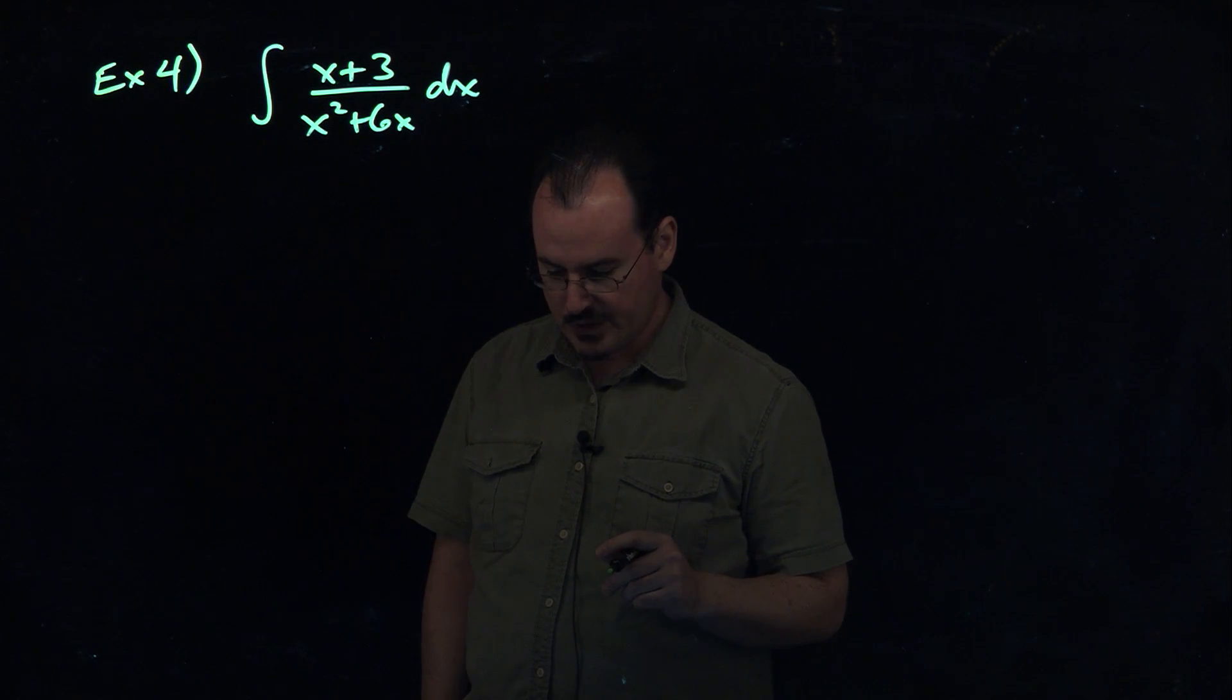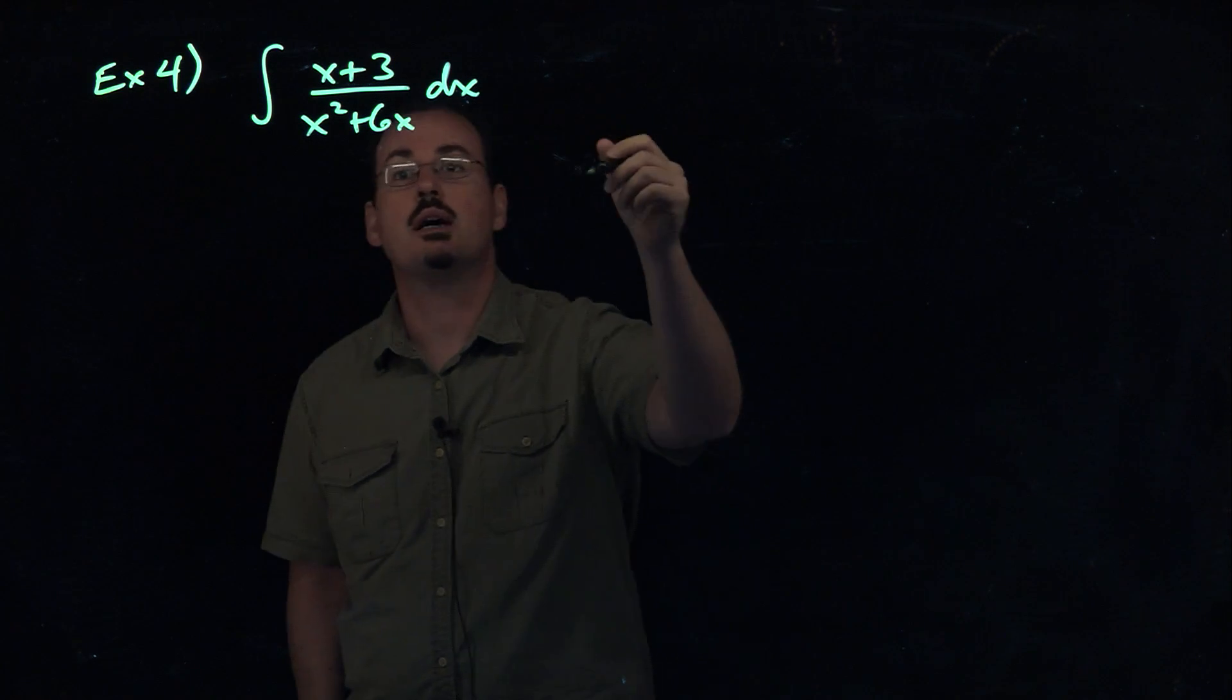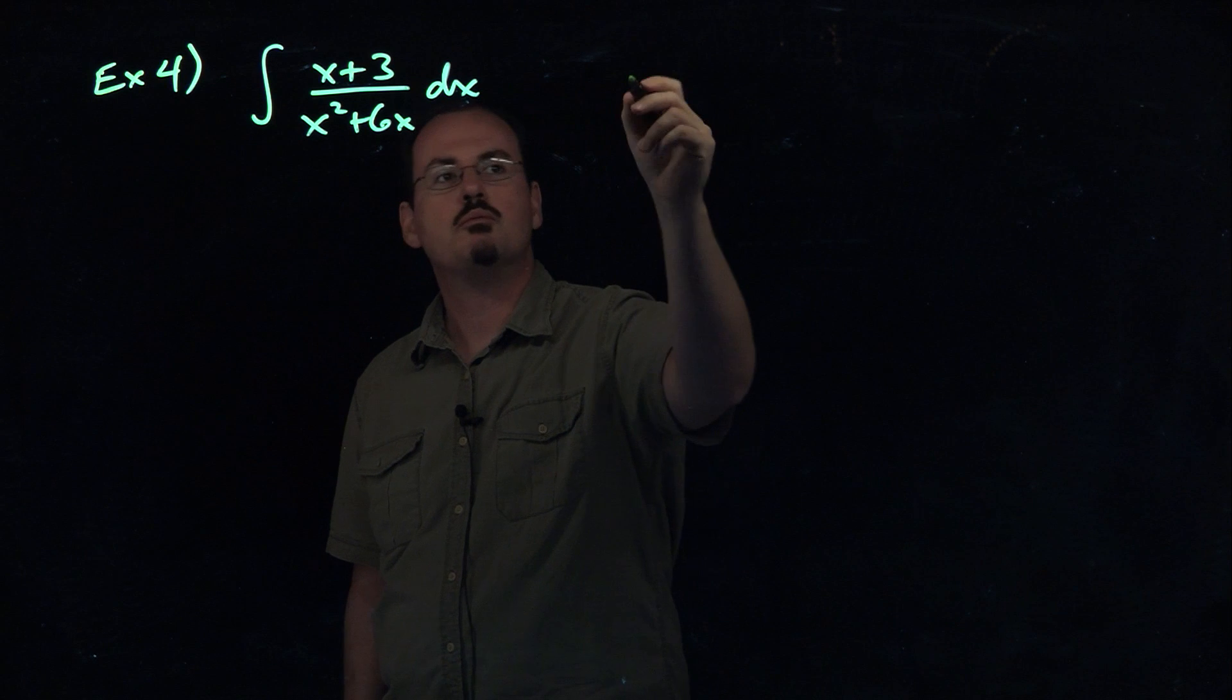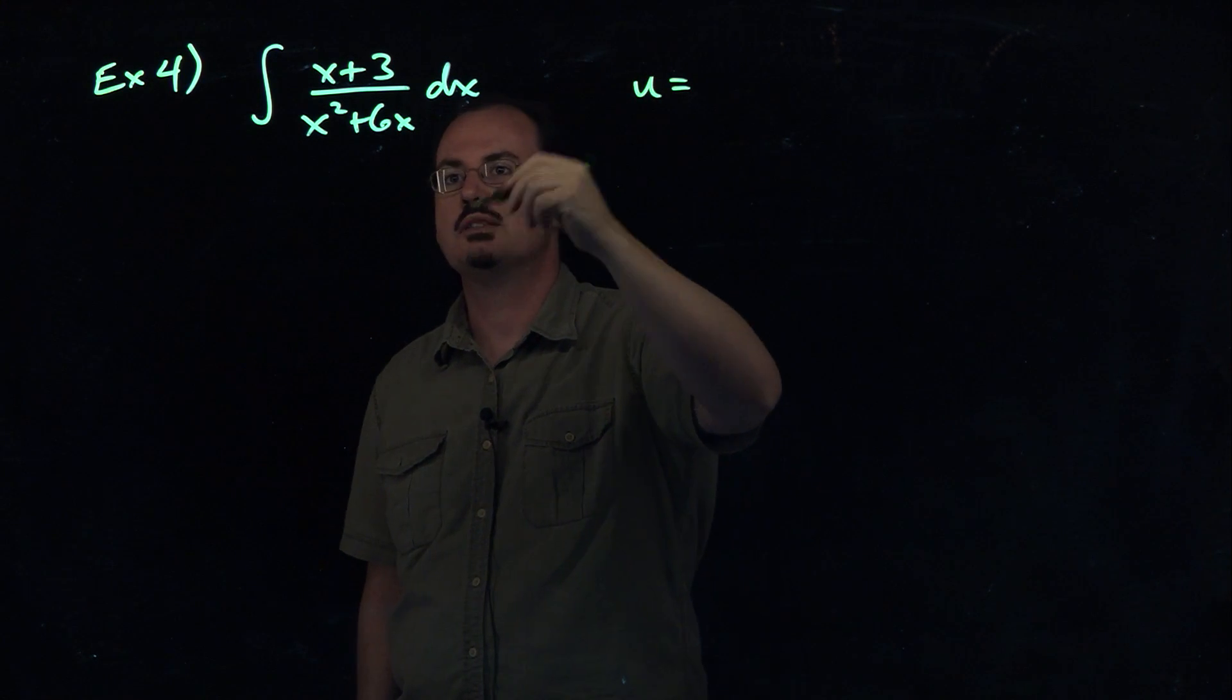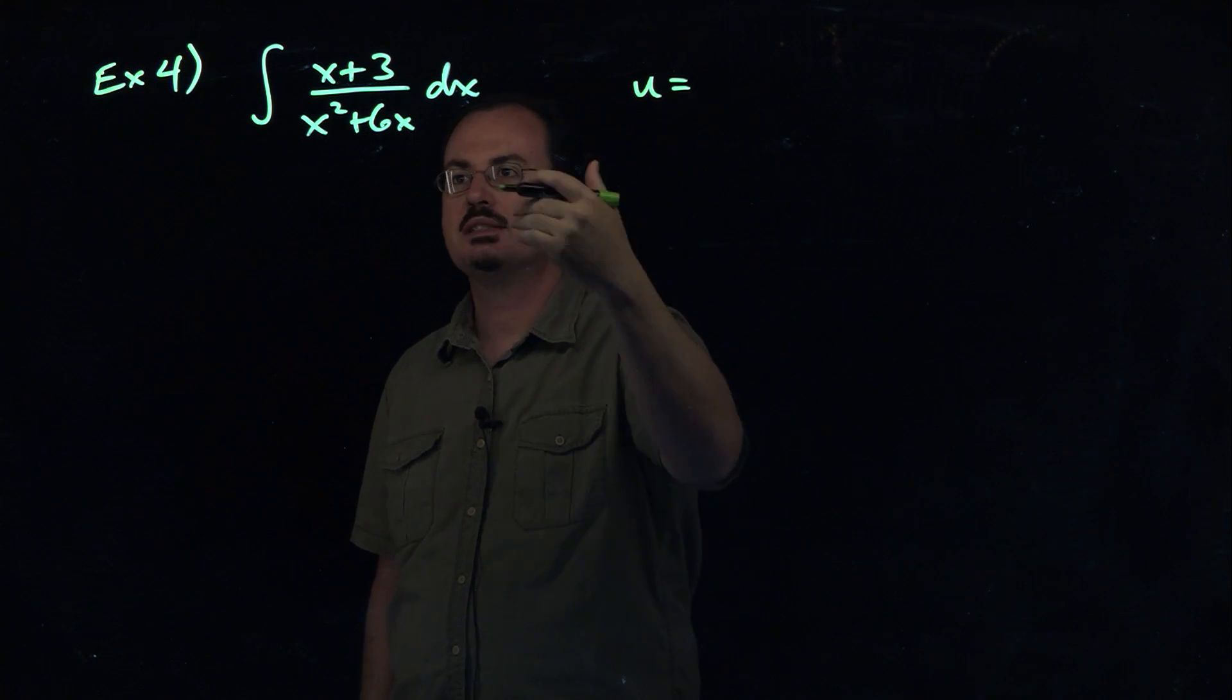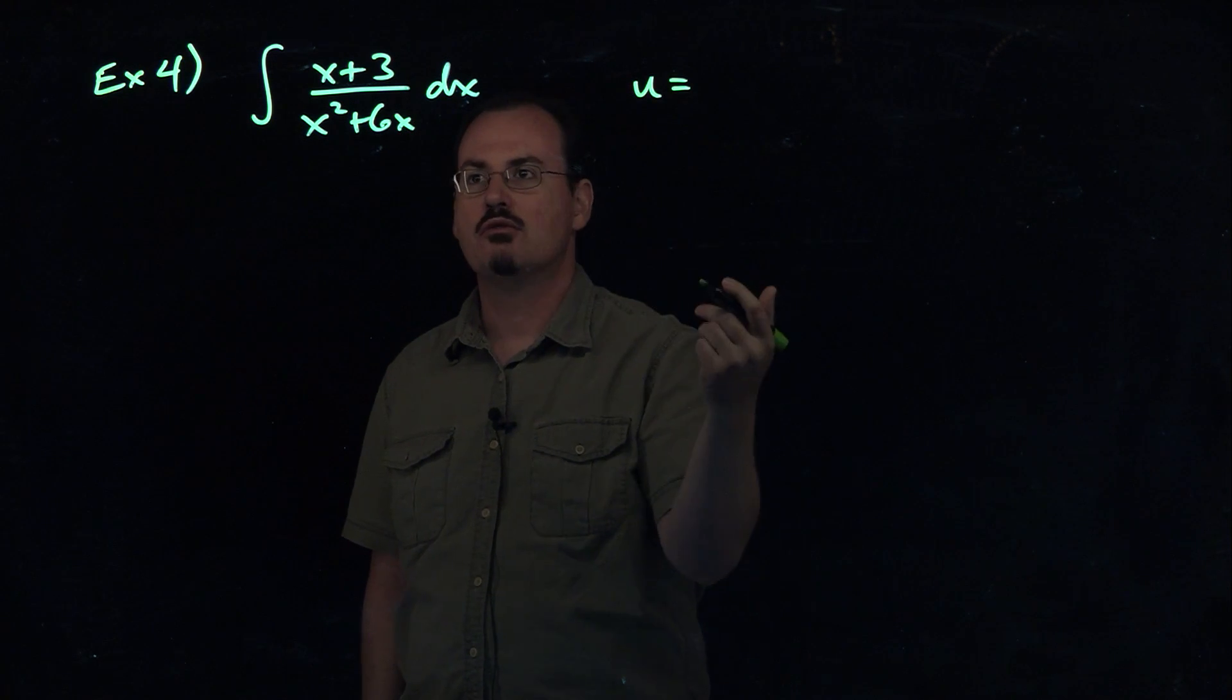We're looking for an integral that has the function on the bottom and the derivative of the function on the top. Typically, we can just follow the idea of letting u be either the thing that's in the parentheses, the thing that's in the denominator, or the thing that's under the radical.